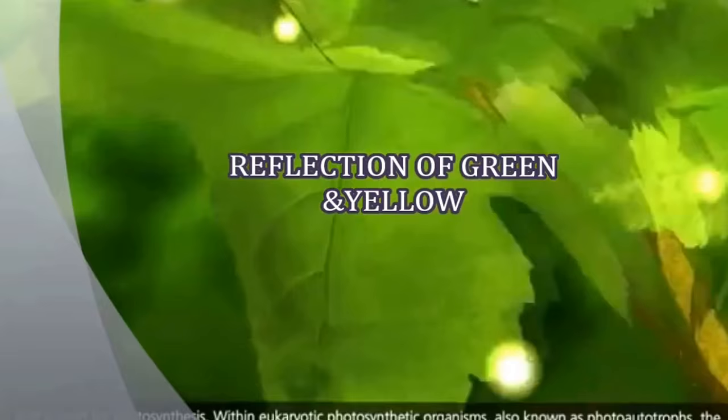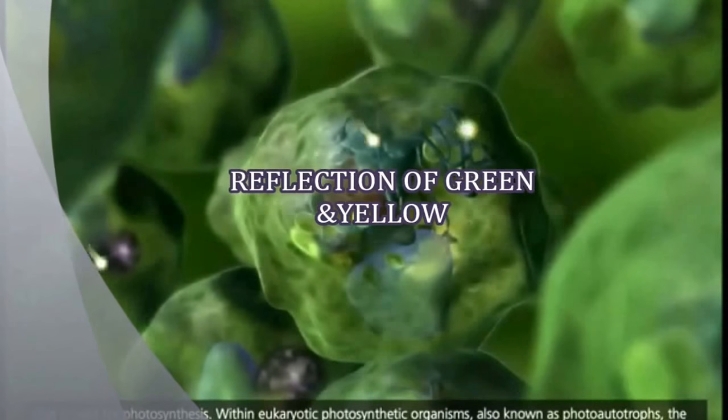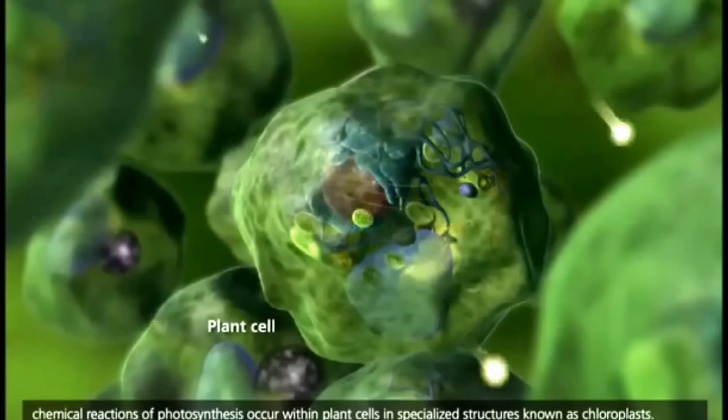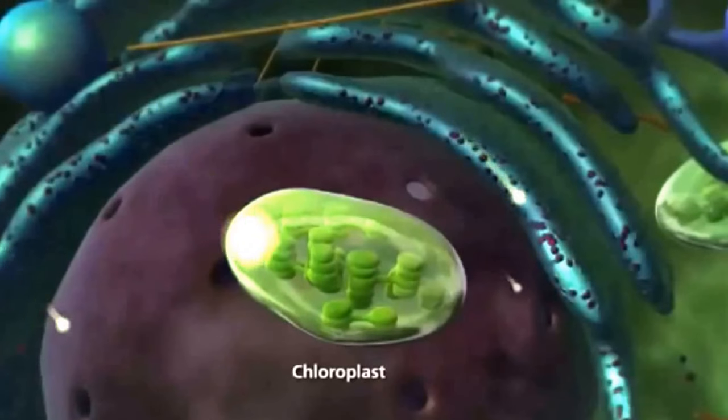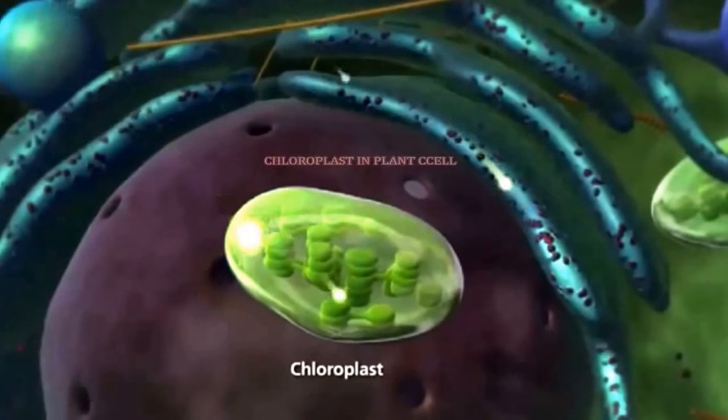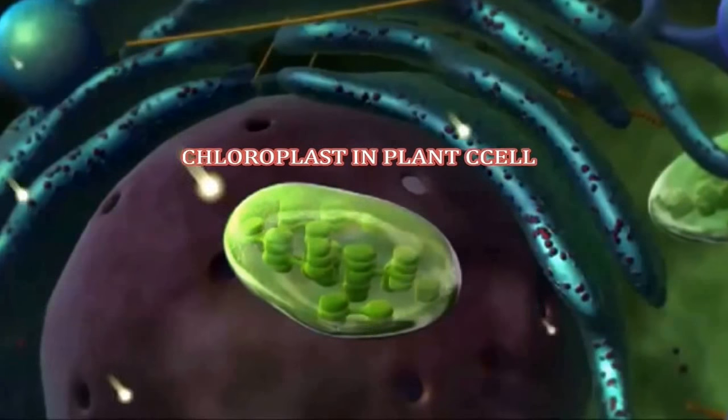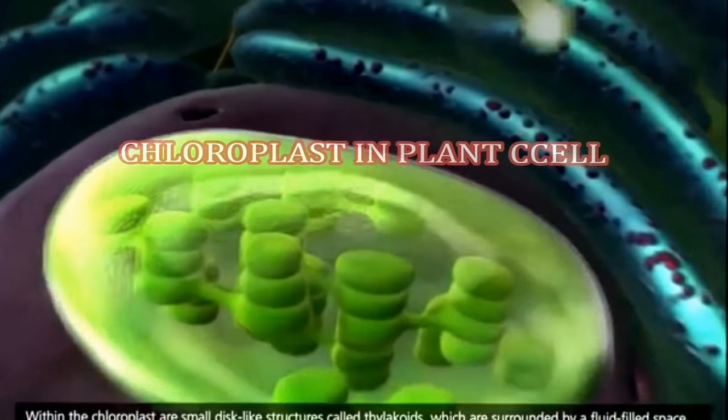Majorly red and blue colors are helpful for the process of photosynthesis. Light enters into the plant cells and it falls on the chloroplast.